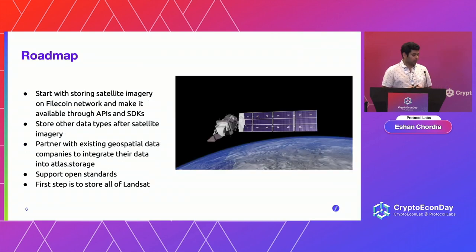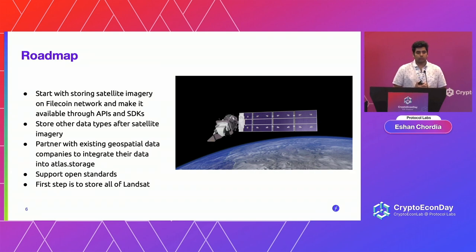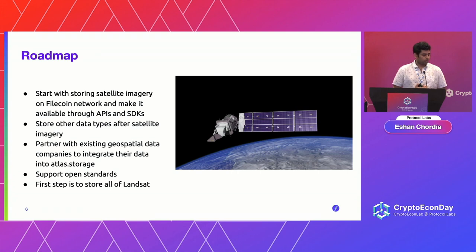This is a picture of Landsat 9, a satellite currently in space operated by NASA and USGS. The Landsat program started in 1972 and has been capturing pictures of the earth for the last 50 years, now on Landsat 9. In aggregate, the Landsat program has collected about 5 to 7 petabytes of imagery and metadata — a great use case for getting a large geospatial data set onto the Filecoin network. We'll start by storing satellite imagery and making Landsat scenes available through retrieval APIs.